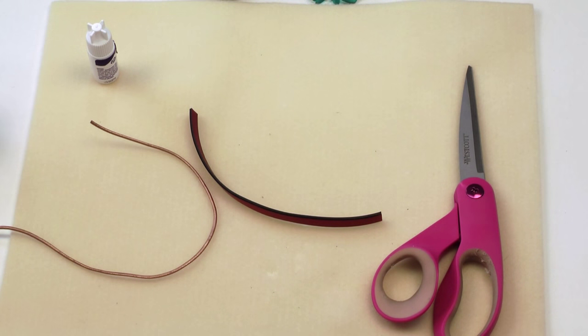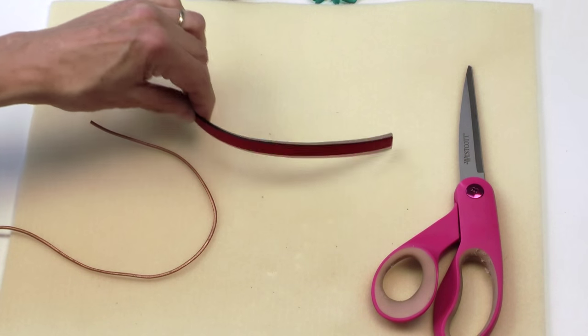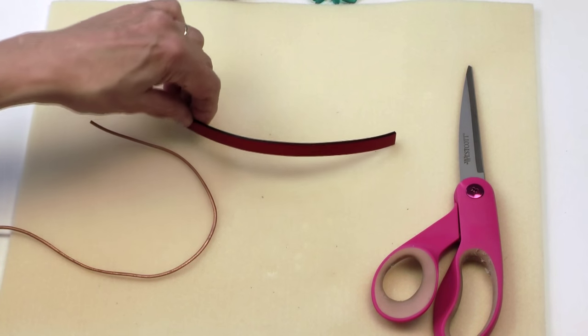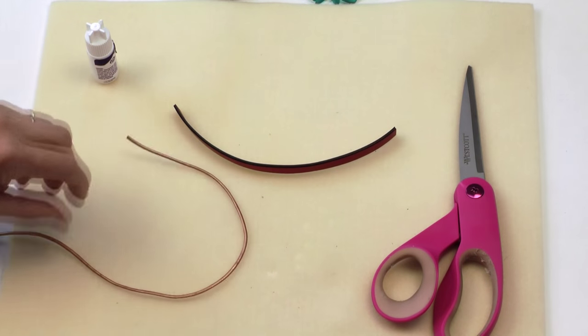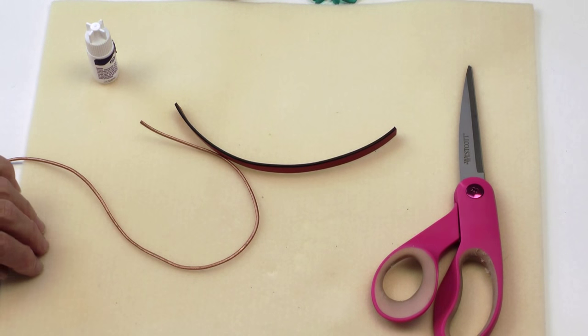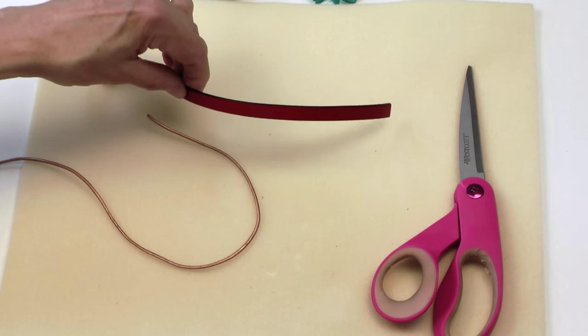Just to start with, I'm going to show you how to make the basic knot. I have, supply wise, a piece of 10 millimeter flat leather and that's what I'm going to work the knot around. And then I have a piece of 2 millimeter round leather that I'm going to form the knot with.